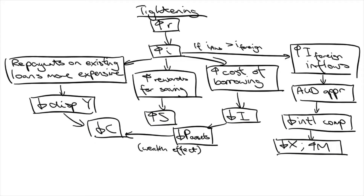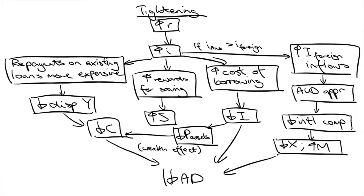If you're doing the HSC, it's best to refer to these as the components of aggregate demand. With reductions in consumption, investment, and net exports, aggregate demand will fall as a result of tightening monetary policy. This helps to reduce demand-pull inflation, which is one of the objectives of the RBA. So that's how tightening monetary policy is used to achieve the objective of low inflation.